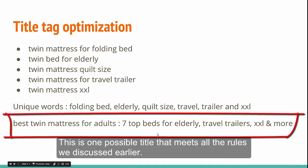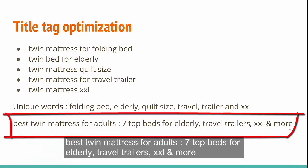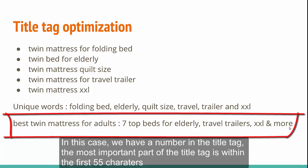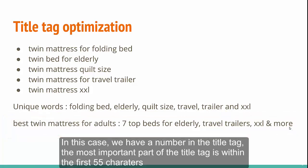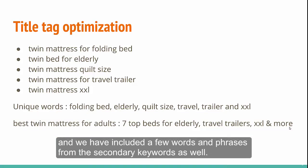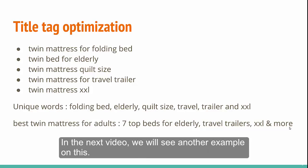This is one possible title that meets all the rules we discussed earlier. In this case, we have a number in the title tag. The most important part of the title tag is within the first 55 characters and we have included a few words and phrases from the secondary keywords as well. In the next video, we will see another example of this.